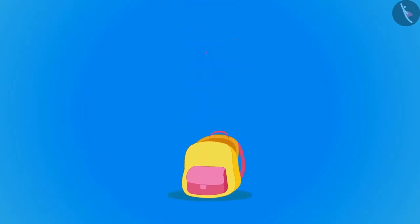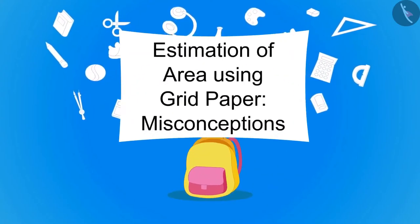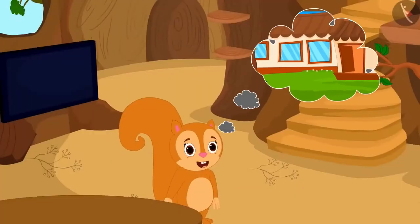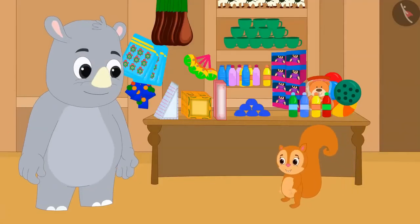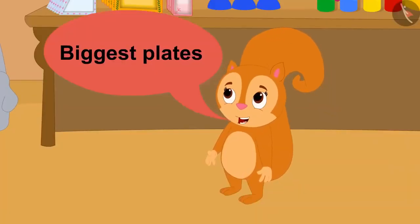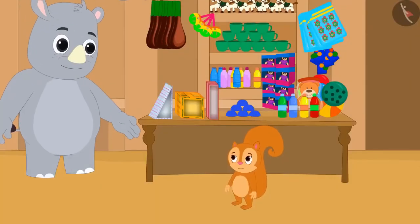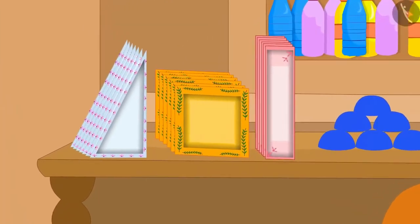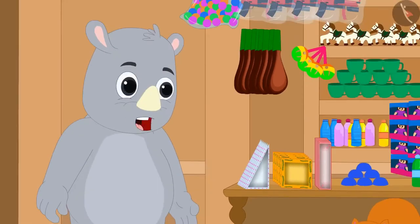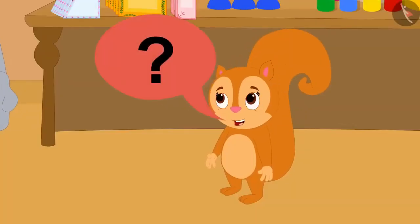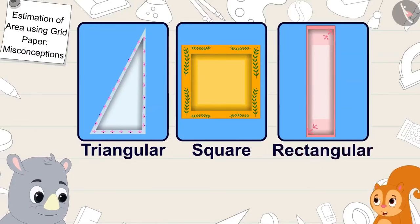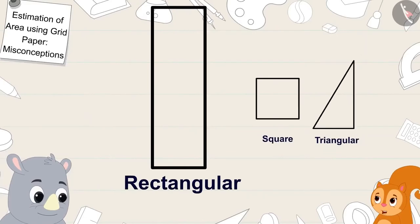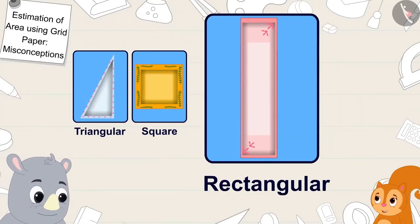Chanda wants to open a new restaurant and has come to buy plates at Gaggu's shop. I want to buy the biggest plates, Chanda told Gaggu. Gaggu showed plates of three shapes and said all these plates are of new designs and you can serve exactly the same amount of food on all of them. But how is that possible, Gaggu? This plate is triangular, this one is square shaped, and this plate is rectangular. Because the rectangle is bigger than square and triangle, the rectangular plate is bigger than both these plates, Chanda said.